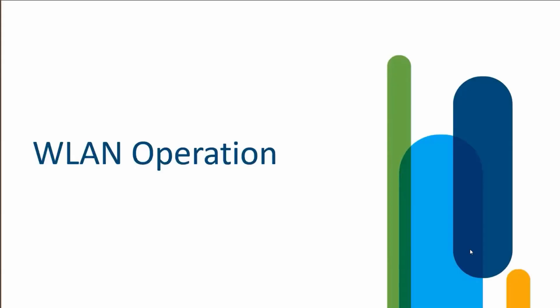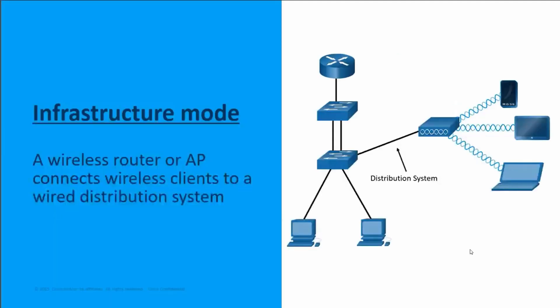Let's jump into wireless LAN operations — wireless local area network operation. To get started, we need to talk about two different types of modes: infrastructure mode and ad hoc mode. With infrastructure mode, we're focusing on a wireless network that's connected to wireless devices.